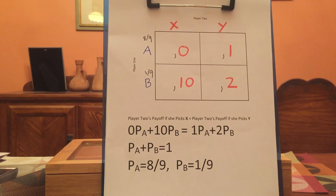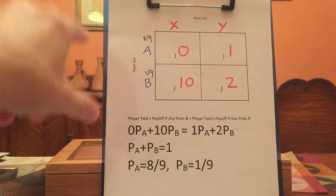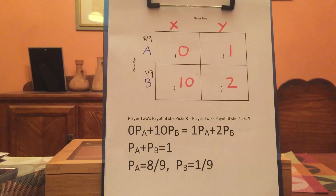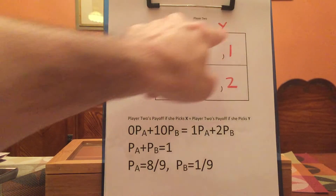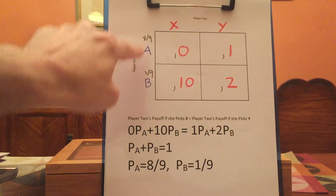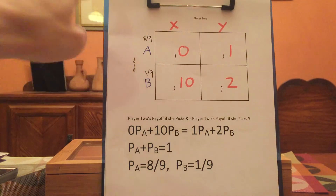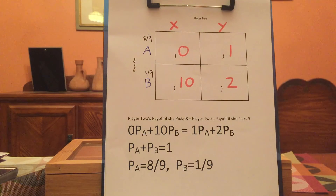You should now be able to easily verify that you get the same average payoff from playing X as from Y, given these probabilities for what player one is going to do.